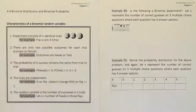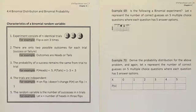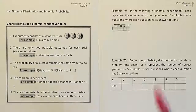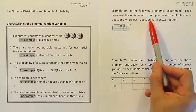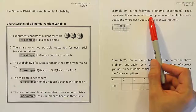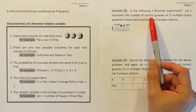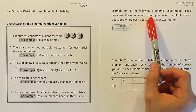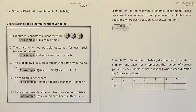Criteria two says there are only two possible outcomes for each trial: success or failure. If we're taking a guess on a question and we're interested in whether we get it correct or incorrect, there are only two possible outcomes — either right or wrong, correct or incorrect. So we meet criteria two.